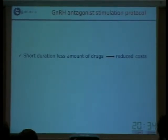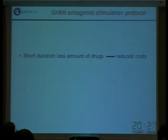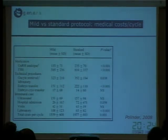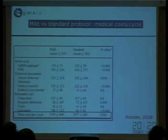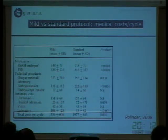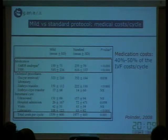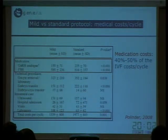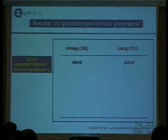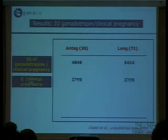Another important point is the reduced amount of days of stimulation, the reduced amount of drugs, and the reduced costs, especially in these moments of financial crisis. In a paper by Polmer in 2008, there was a significantly lower cost with milder stimulation protocols compared to the standard protocol, and 40-50% of these costs are due to medication. In our own analysis, we observed that using the antagonist protocol, the international units of gonadotrophins per clinical pregnancy were significantly lower.